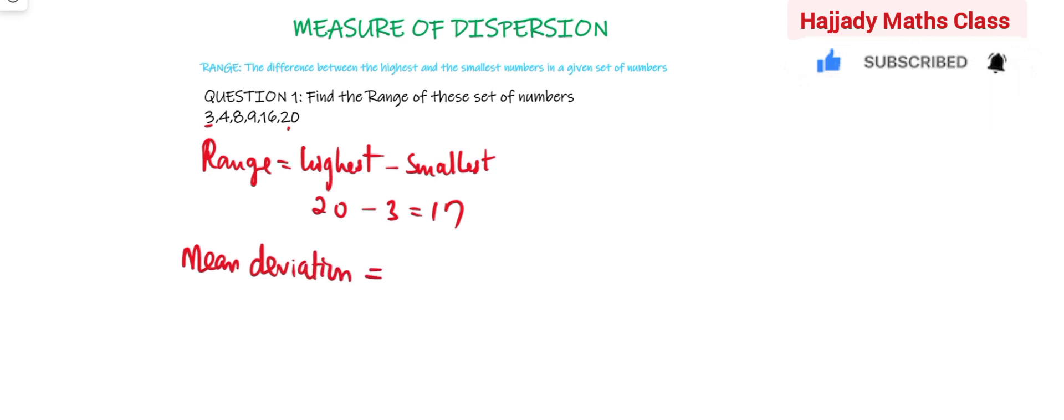So here we are going to have summation |x minus x̄| over n. Take note, this is an absolute value. When you say an absolute value of x, it can assume two values.